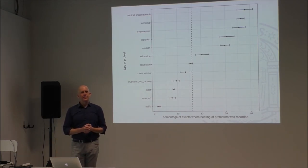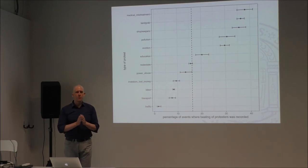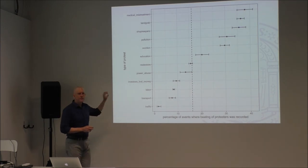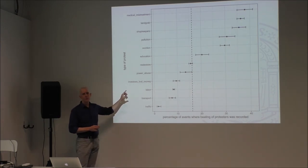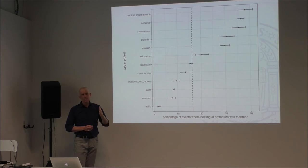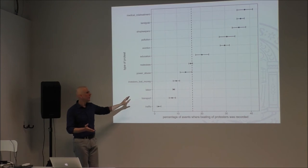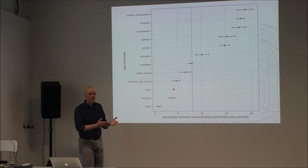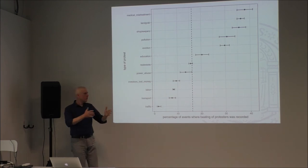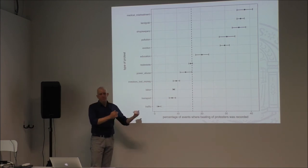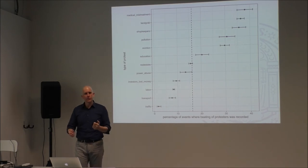An audience member asked: given the earlier classification problems, how were we able to gather all this protest statistics? To clarify: the protest analysis uses the hand-collected dataset mentioned earlier, not the social media classification. That dataset ended in June 2016 because those who collected it were arrested — one person is still in prison — so they couldn't continue. I've tried to use social media to extend and identify protests, but I haven't been able to do this successfully so far.